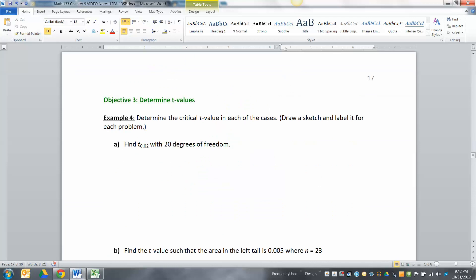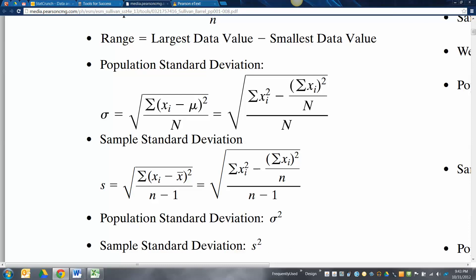All right, so let's learn how to find some critical t-values. We're going to do this several ways, including a table. I want to find t.02 with 20 degrees of freedom. The first thing I'm going to do is go to StatCrunch. Go to stat, go to calculators, go to t.